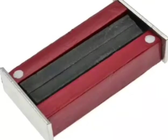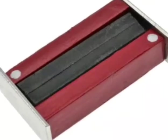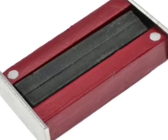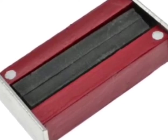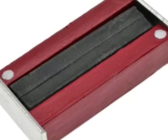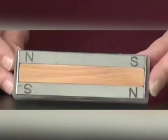Bar magnet ko pairs mein rakha jata hai. Same side mein dono magnet ka opposite pole rakhke, beech mein wooden piece rakha jata hai. Aur dono side mein poles ke taraf soft iron ka piece use kiya jata hai.